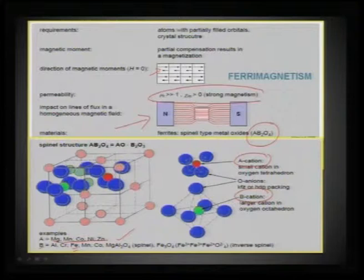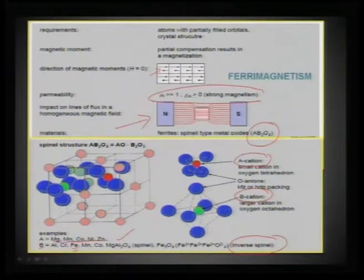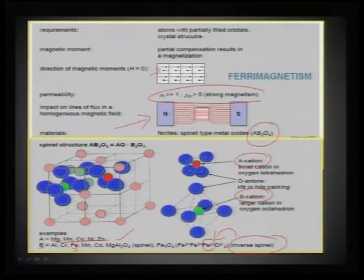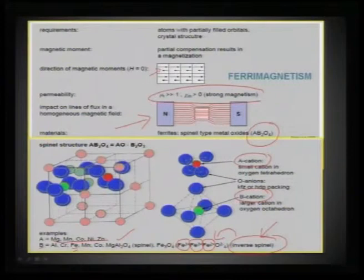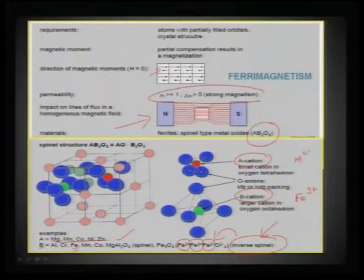For ferrites, B is always iron, and you can generate magnesium ferrite, manganese ferrite, cobalt, nickel, or zinc ferrite. The well-known spinel is the inverse spinel — iron oxide or magnetite — where Fe²⁺ and Fe³⁺ both occupy the B site, while Fe³⁺ is also in the A site. Because of the mixed valency of Fe²⁺ and Fe³⁺ in the B site, this is called an inverse spinel. In a normal spinel ferrite, Fe³⁺ is always in the B site and M²⁺ is in the A site.